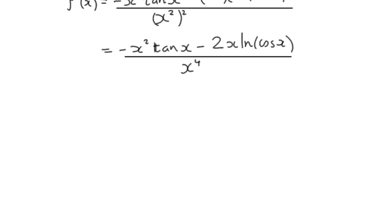we've got a minus sign in both terms. What I'm going to do is take negative x as a common factor, which gives us x tan(x) - 2 log(cos(x)) divided by x to the power of 4.